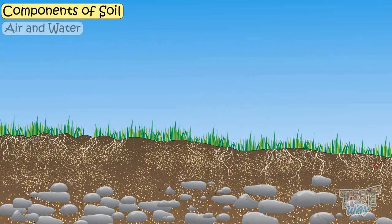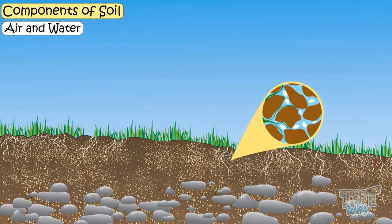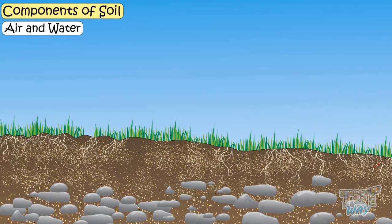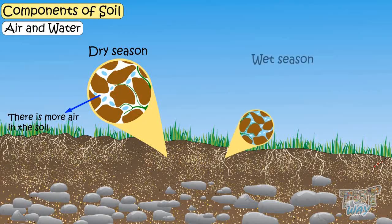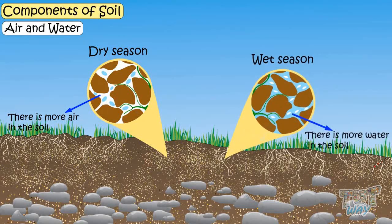Air and water. Air and water are present inside the soil pores. During dry season air is more in the soil, and during wet season water is more inside the soil.